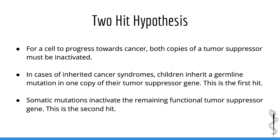Over time, the remaining functional tumor suppressor gene is mutated and becomes dysfunctional, typically as a result of a somatic mutation — this is the second hit. This is exactly what occurs in retinoblastoma. It is extremely important to realize that as long as there is one functional copy of a tumor suppressor gene, cancer cannot occur, as this functional gene is sufficient to prevent carcinogenesis.